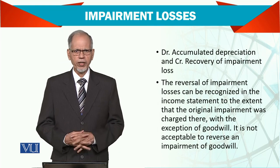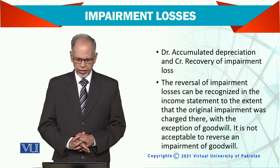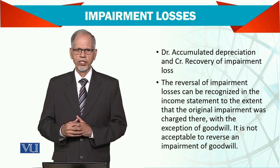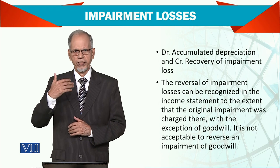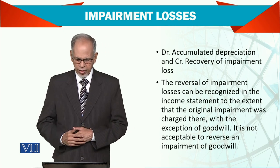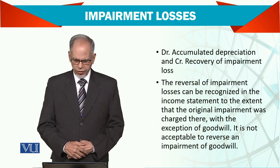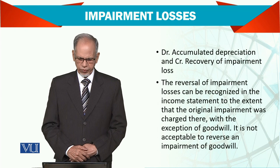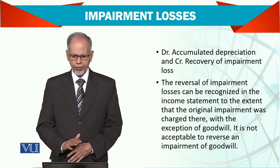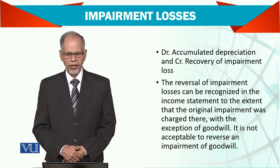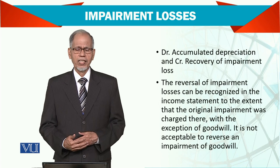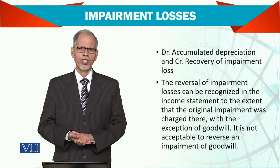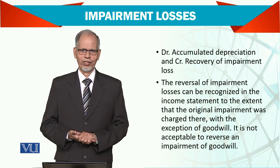In this case, the entry will be simple: we reduce the accumulated depreciation and credit the recovery of impairment loss. If the impairment loss was on a revalued asset, then the reversal will be charged to revaluation. The reversal of impairment loss can be recognized in the income statement to the extent that the original impairment was charged there — with the exception of goodwill, where it is not acceptable to reverse any impairment. For example, if the impairment loss is 10,000 and the reversal is 15,000, you can only reverse 10,000 — it is limited.